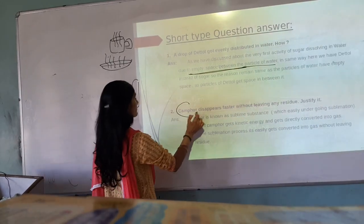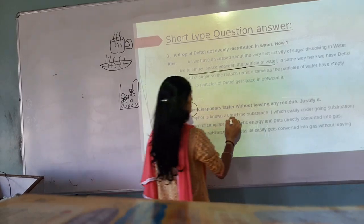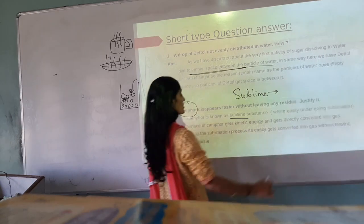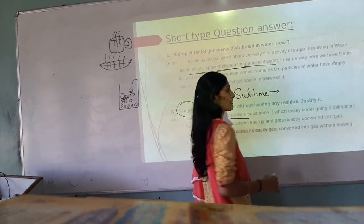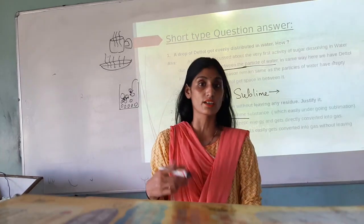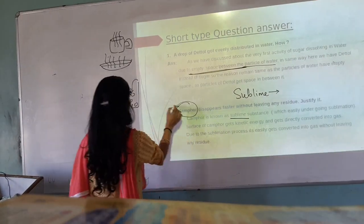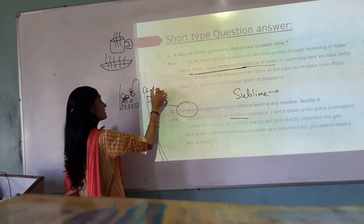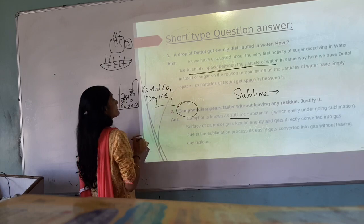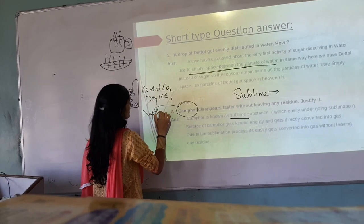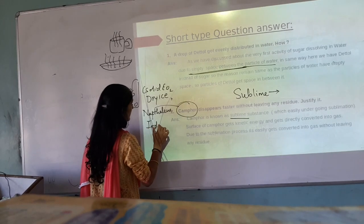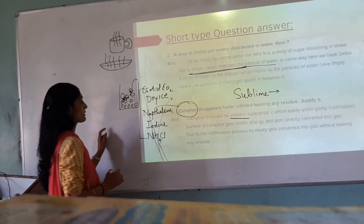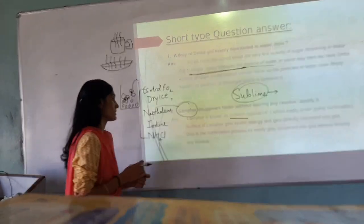Now, camphor is a sublime substance. A sublime substance is one that is easily handled by sublimation — sublimation means it converts from solid to gas or gas to solid. Other examples include dry ice (also known as carbon dioxide solid), naphthalene balls, iodine, and ammonium chloride. These all are examples of substances that undergo sublimation.